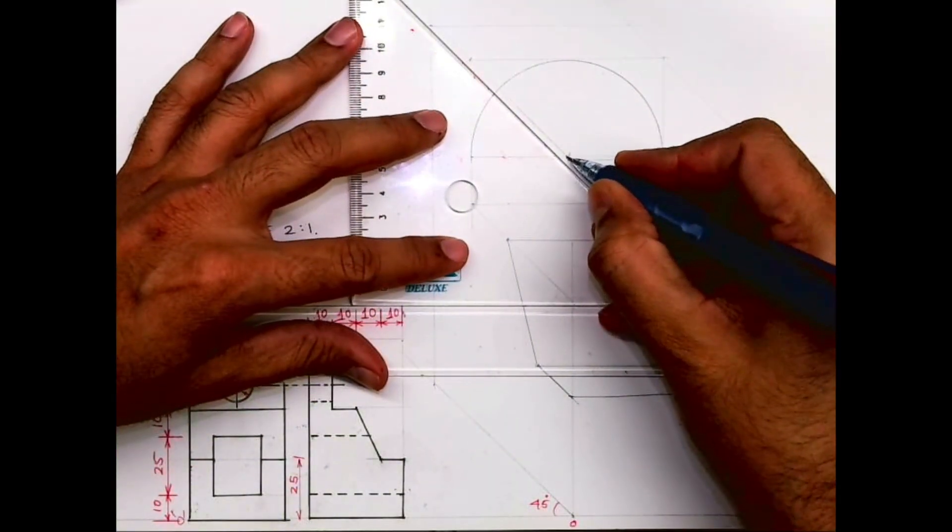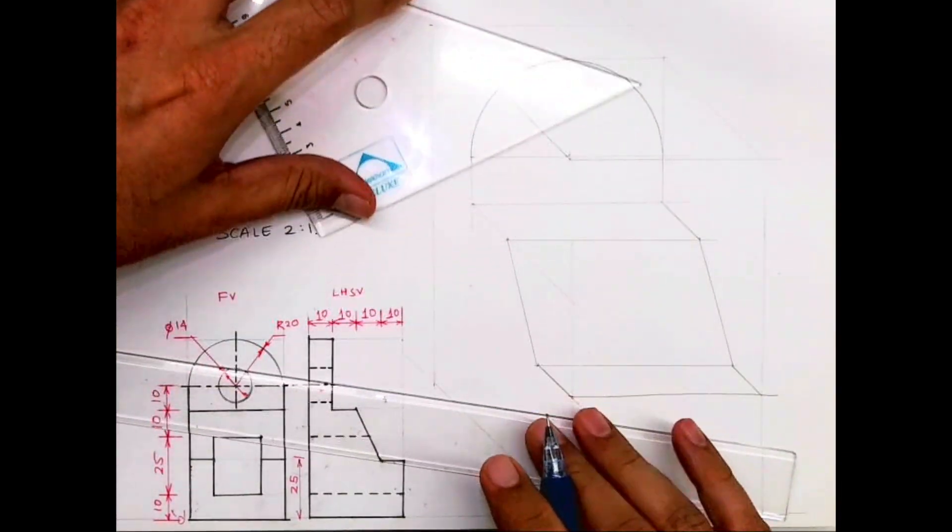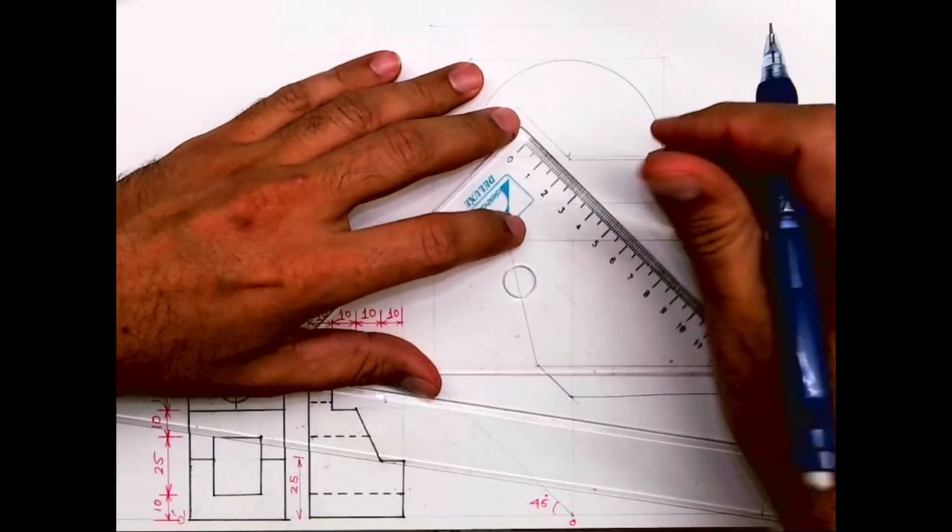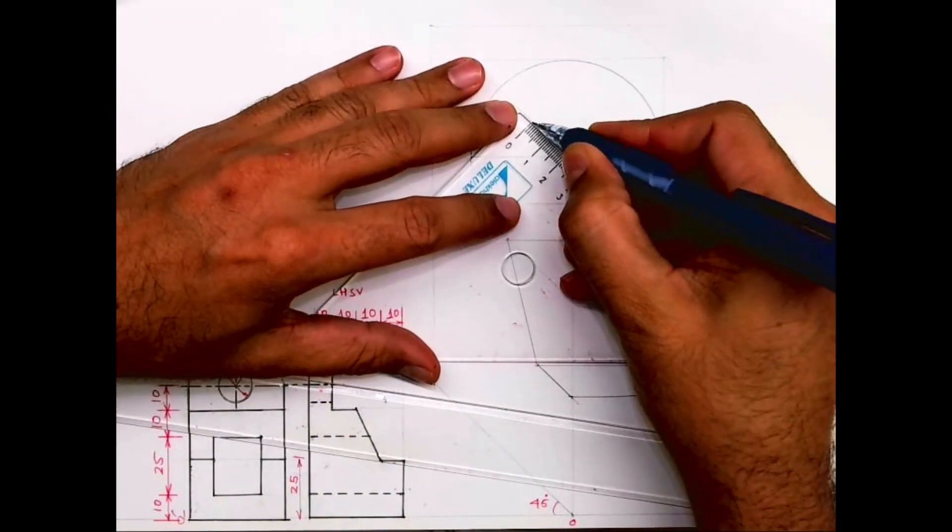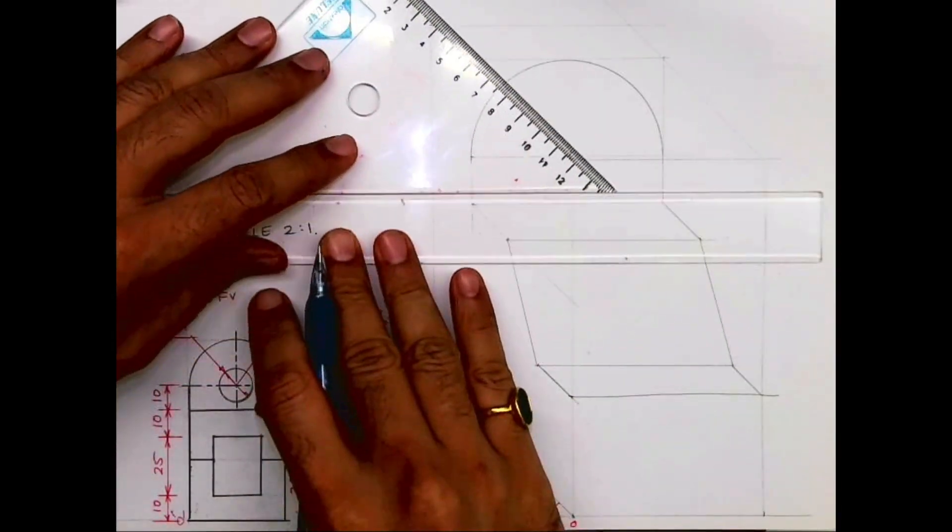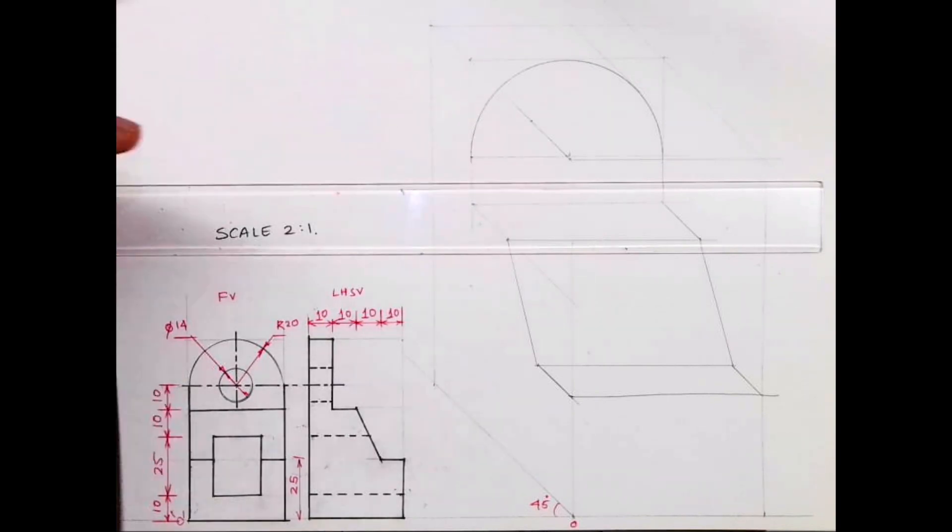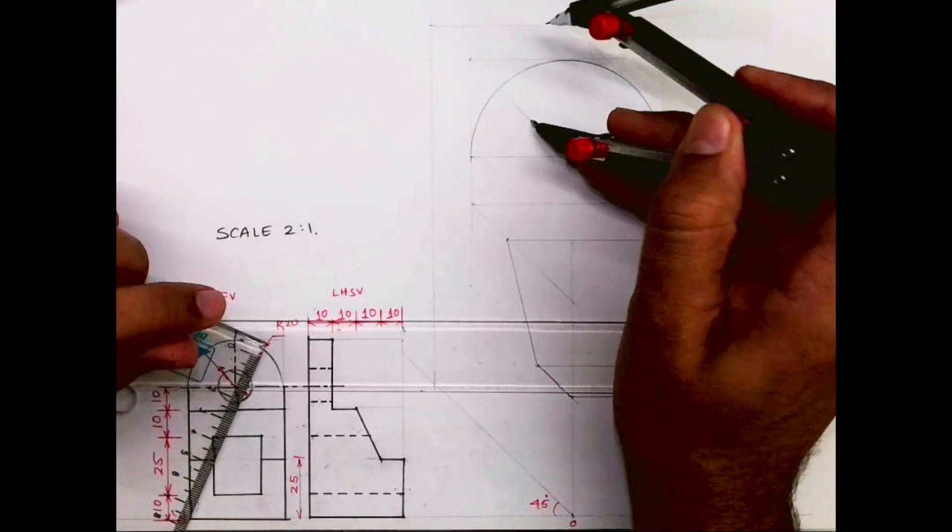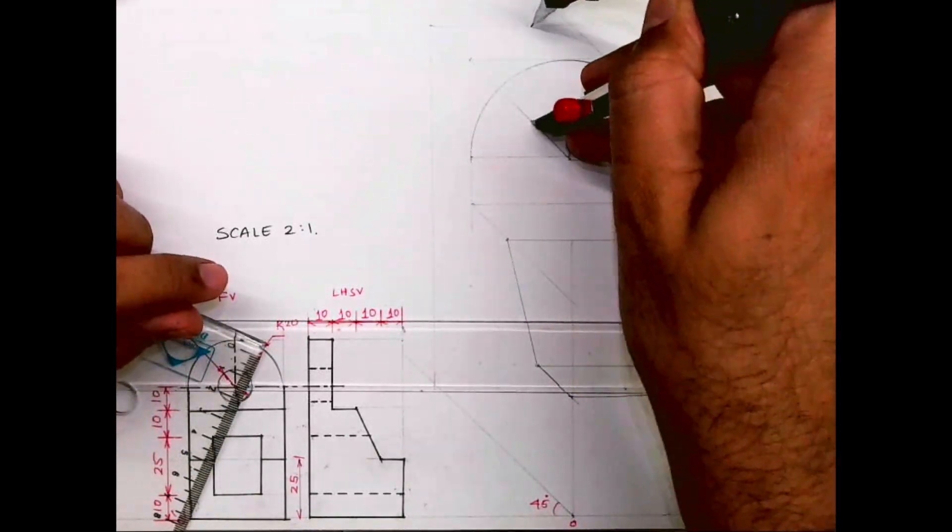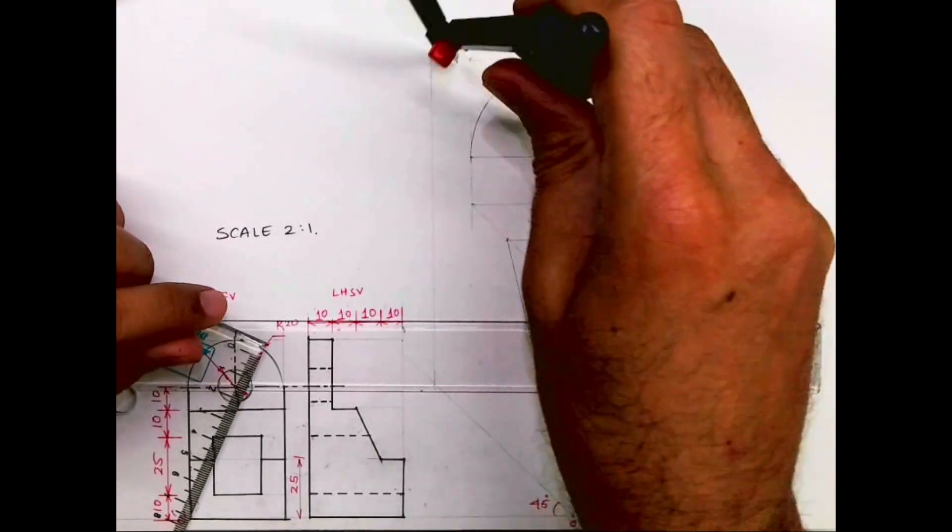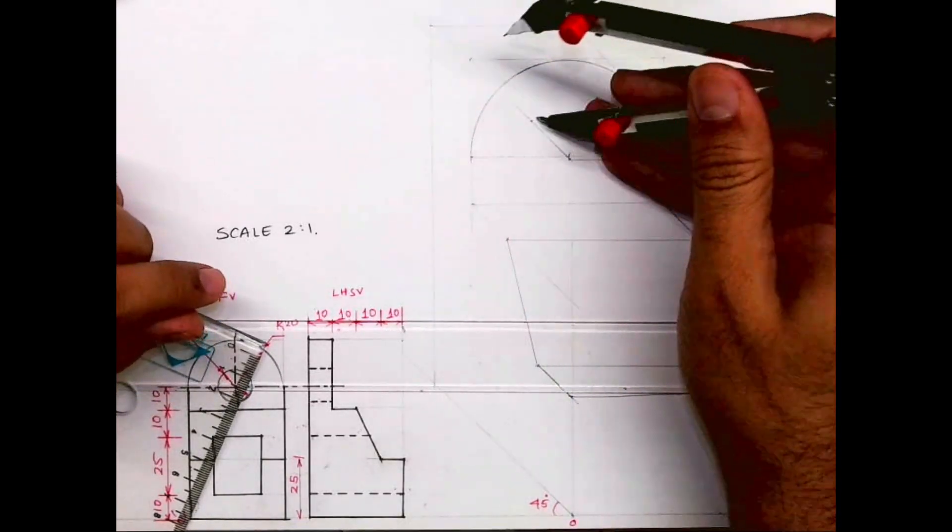Take this point behind by 20 and again you draw radius 40. You can draw tangent. See, you take radius 40, you go behind by 20, and you draw radius 40.